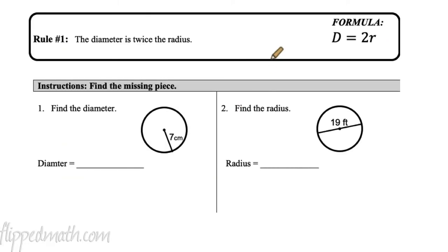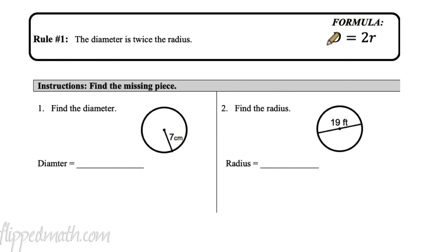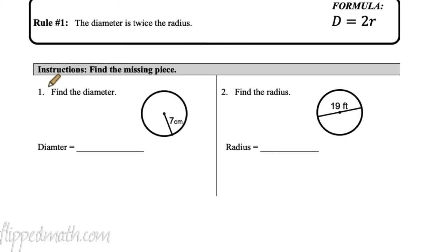Our first formula — rule number one: the diameter is twice the radius. That makes sense because the radius is halfway across and the diameter is all the way. So if you know the radius, you can double it to find the diameter. Most students can just look at the picture and figure it out.